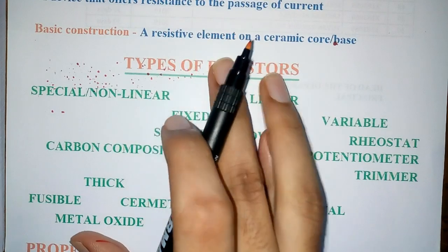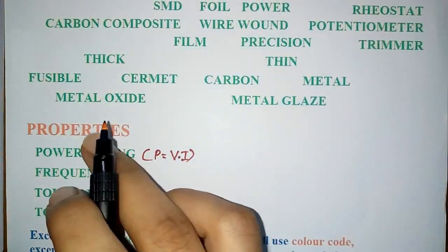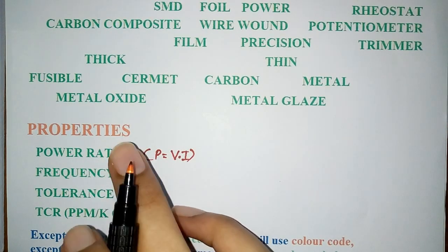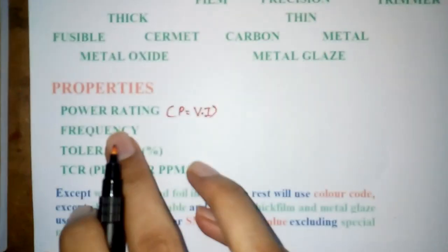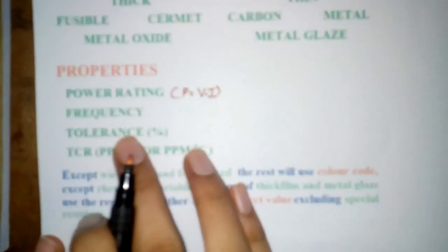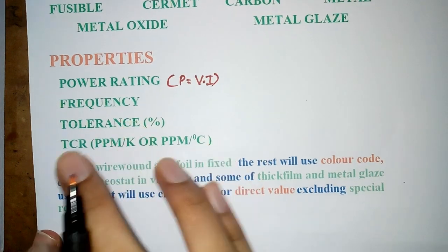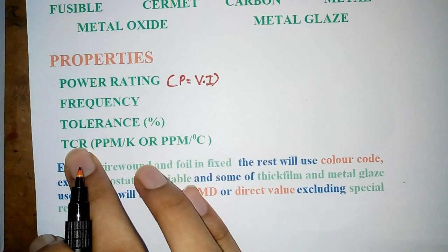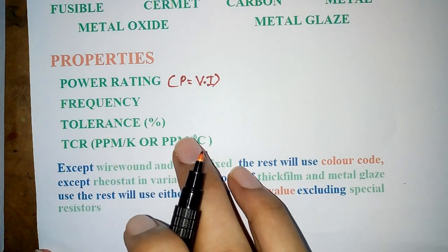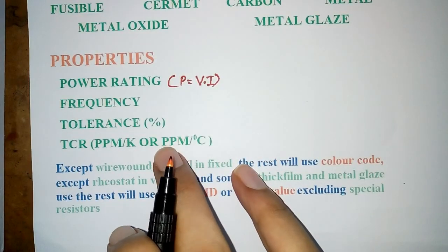Before diving into types of resistors, let's have a look at its properties. Power rating tells us the operating voltage, current and power dissipation. Frequency is the operating frequency. Tolerance is defined as the error in resistance value measured in percentage. TCR means temperature coefficient of resistance. It is measured in ppm per Kelvin or ppm per degree centigrade. It represents the change in resistance due to change in temperature.